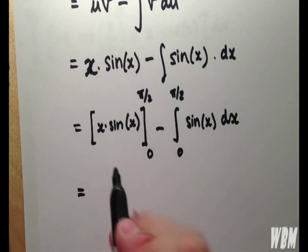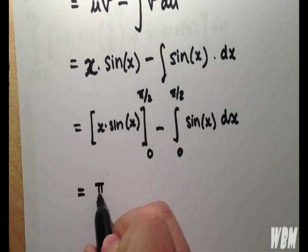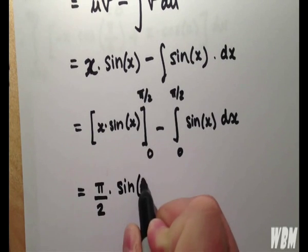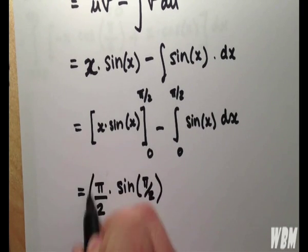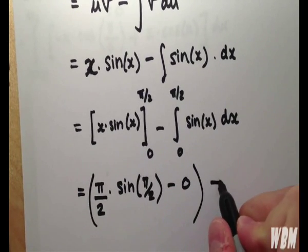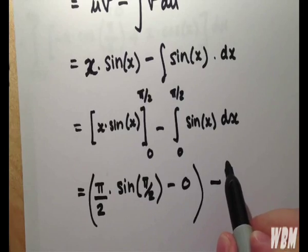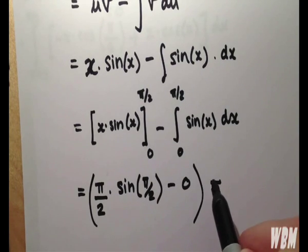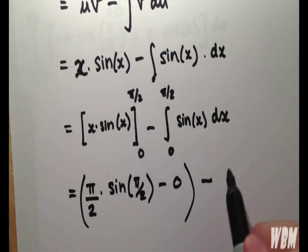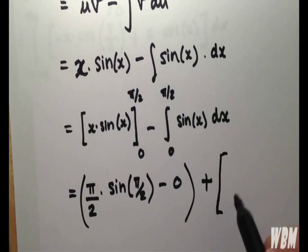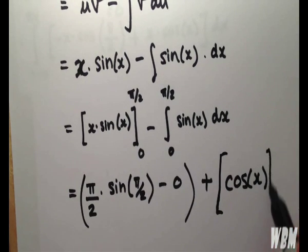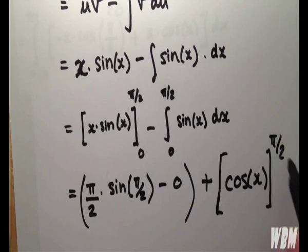We are then able to evaluate at pi over 2 and 0. So we have x sin of x minus the integral of sin, which is of course minus cos. So if the integral of sin is minus cos and we have a minus, we can have plus cos between these two values here.